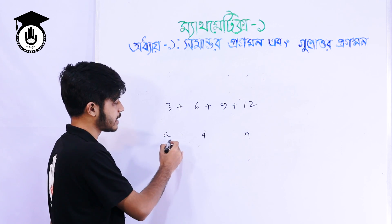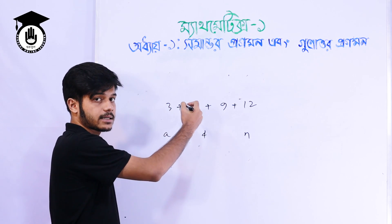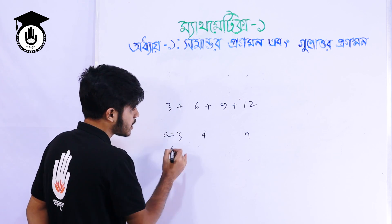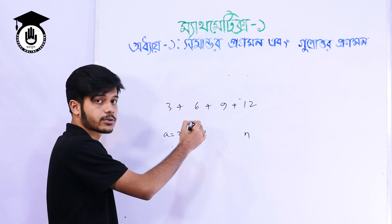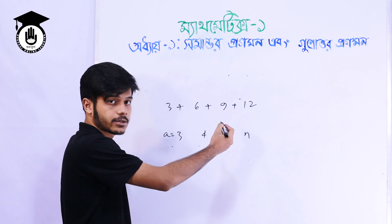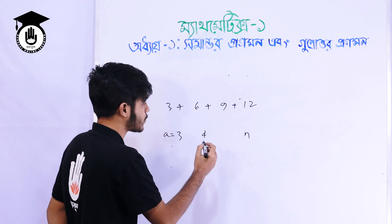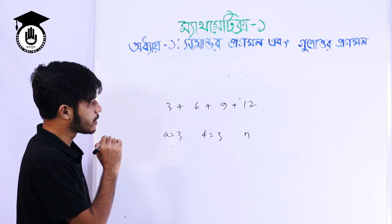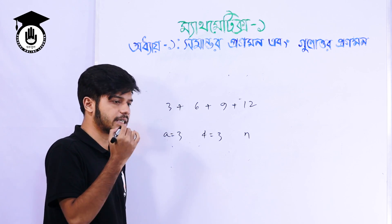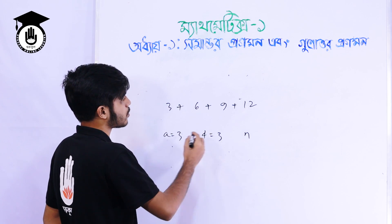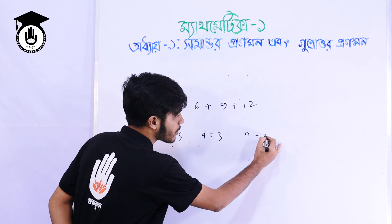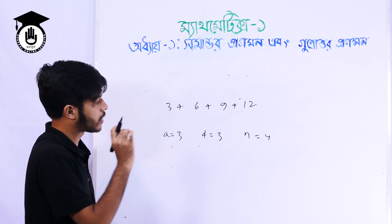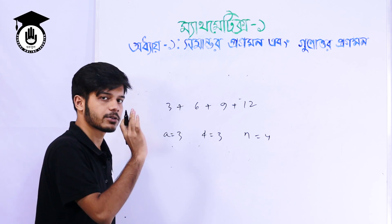Look at this. What is this? This is 3. The point is 3 plus 6 plus 3; 6 plus 9 plus 3; 9 plus 12 plus 3. The point is 3. The point is N. The point is 4.